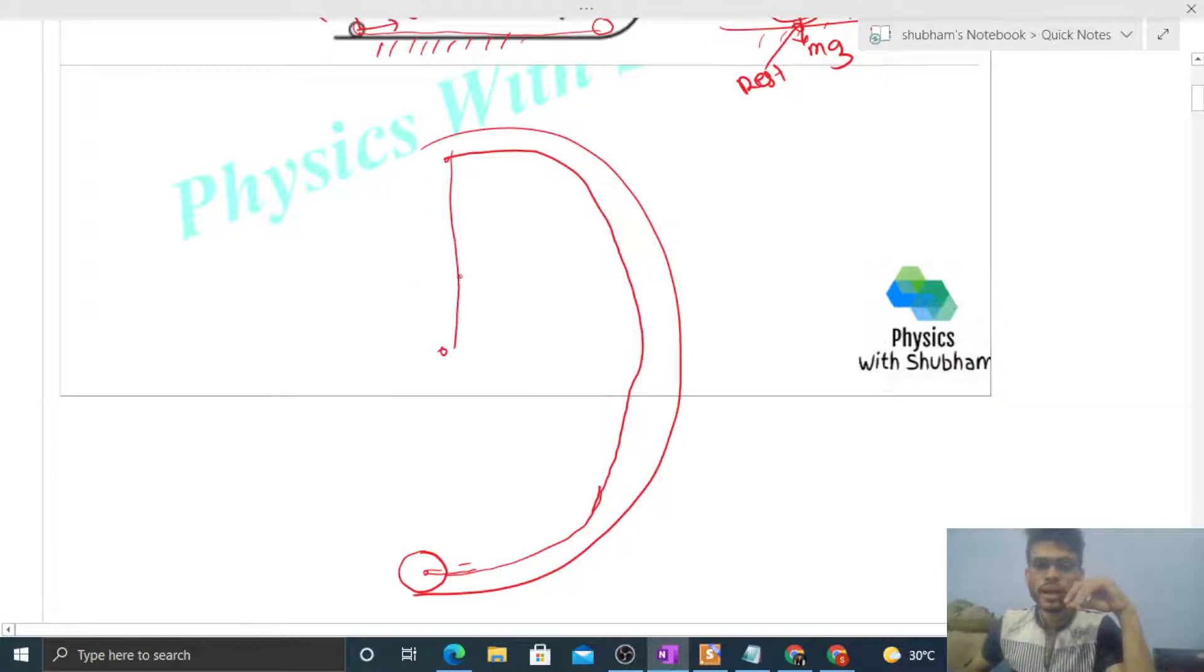Now what is the condition for a particle or for a sphere to complete this vertical circle? At the topmost point, the speed is v1, and at the bottommost point the speed is v. So the speed at topmost point should be greater than or equal to under root of radius of the circle in which it is moving, that is capital R minus small r into g.